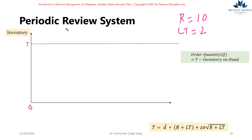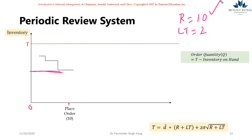As we start making sales, inventories deplete — the black line represents inventory usage. On day 10, we are at a certain level, let's call it X. Since the review period is 10, we place an order here. But because we have a lead time of two days, we will not receive inventories immediately.